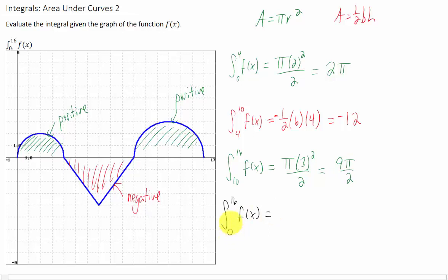Finally, if we want the integral from 0 to 16 of this function, we just add together the areas of the semicircles and subtract off the area of that triangle.